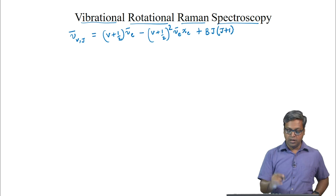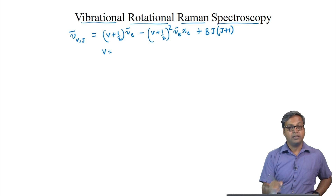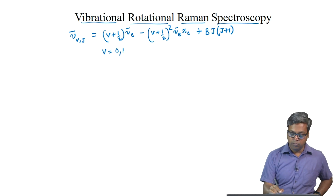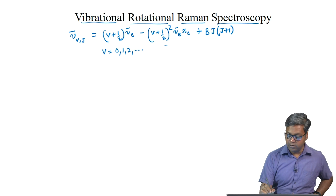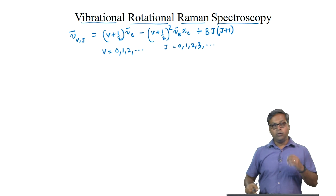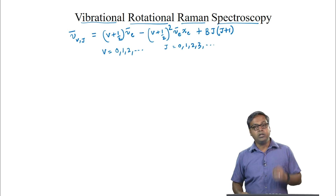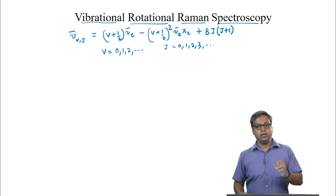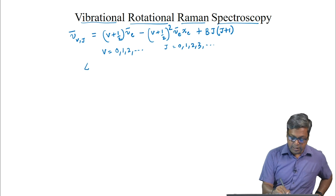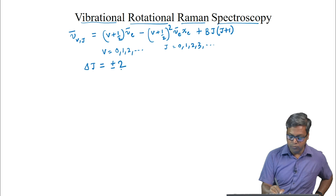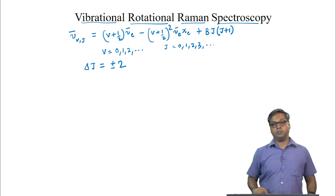Here V can take values 0, 1, 2, etc., and J can take values 0, 1, 2, etc. For diatomic molecules the rotational selection rule is delta J = ±2 for Raman spectroscopy.